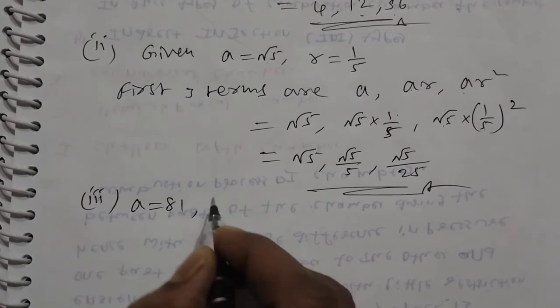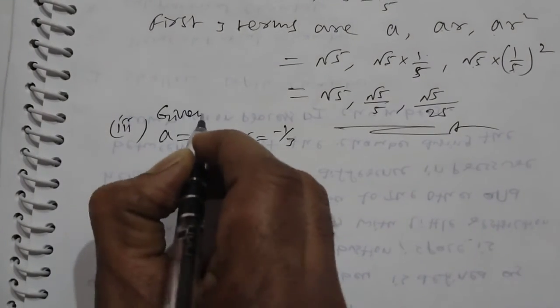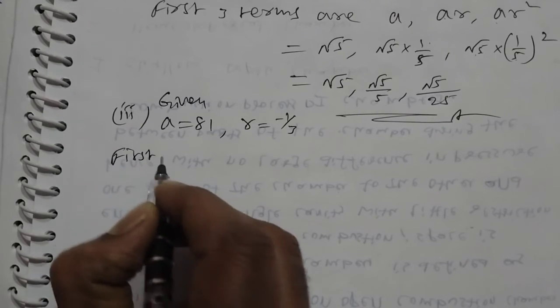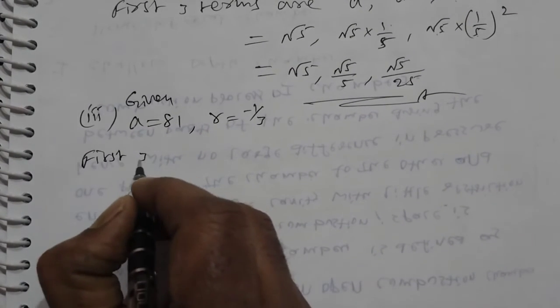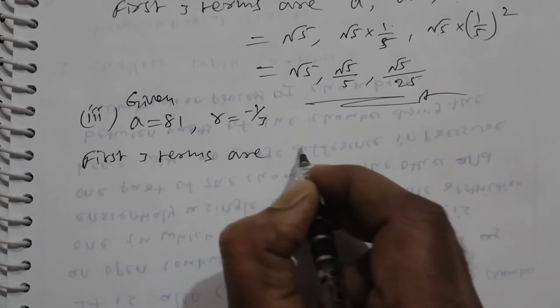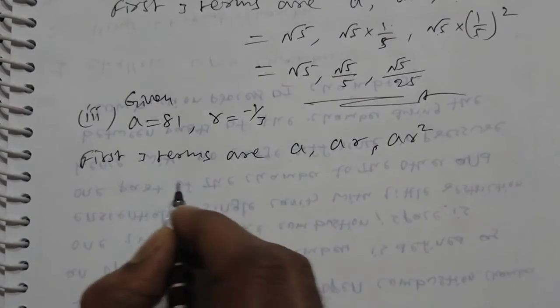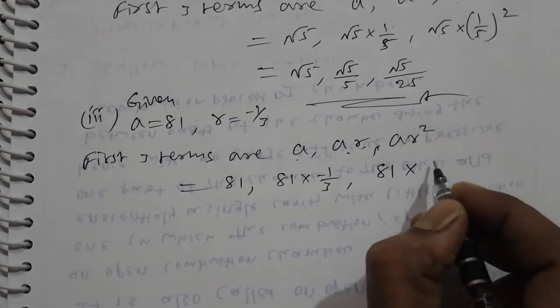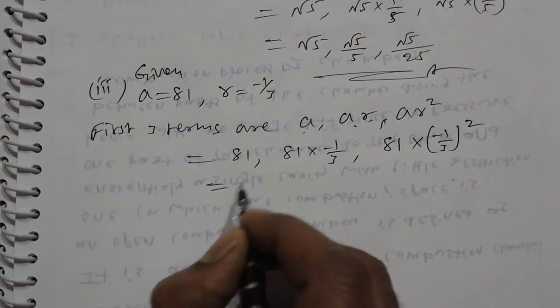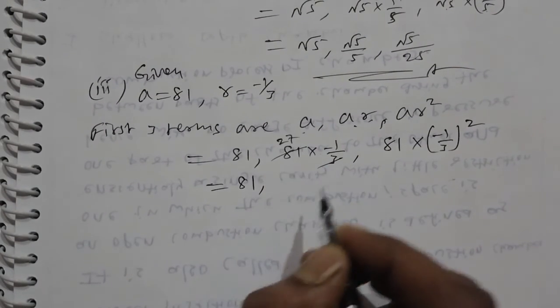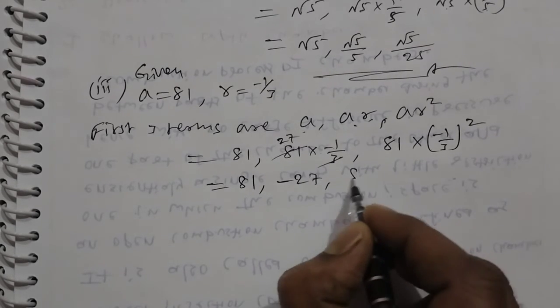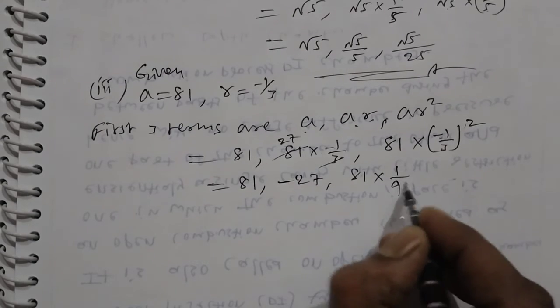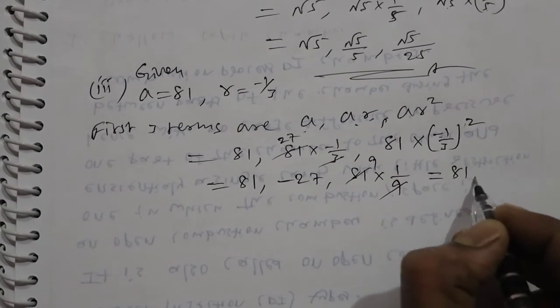Third bit: a = 81, r = −1/3. First three terms are a, ar, ar² = 81, 81 × (−1/3), 81 × (−1/3)² = 81, −27, 9.